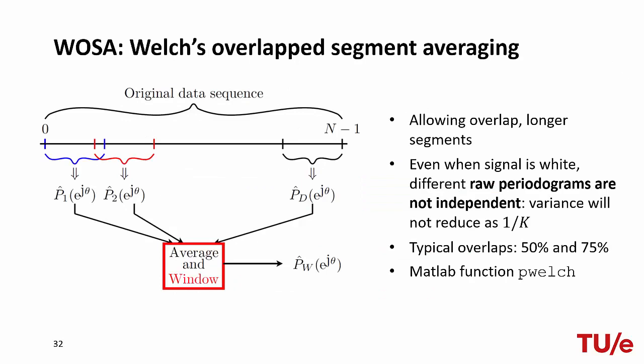To mitigate the increasing bias, Welch proposed a method known as WOSA — Welch Overlapped Segment Averaging. This method is very similar to Bartlett's, with the only difference that it allows for overlap between the segments. By allowing this overlap, the K segments are now longer, so the bias increases less compared to Bartlett's method. However, since the single periodograms are no longer independent, the variance does not scale any longer with 1 over K. This method is available in MATLAB via the command pwelch. Typically used overlaps are 50% and 75%.